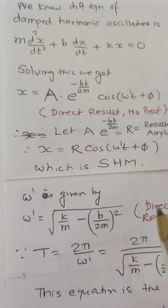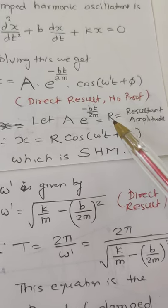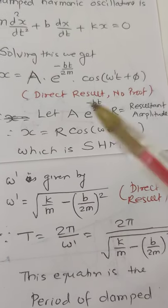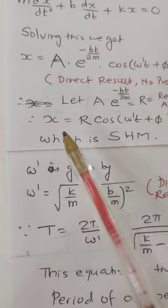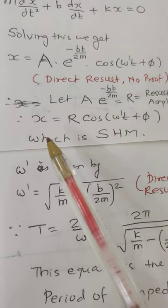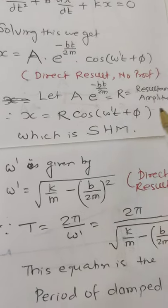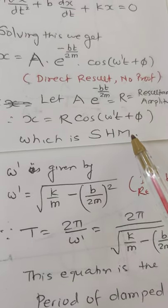Mug it up directly. Let A·e^(-bt/2m) = R, equal to resultant amplitude. This is also direct, nothing is in it. Therefore, x = R·cos(ω't + φ). This is nothing but x = A·cos(ωt + δ) or A·sin(ωt + δ), which is nothing but equation of SHM.